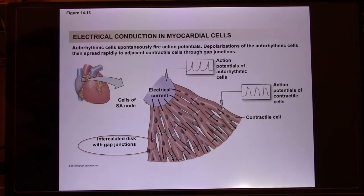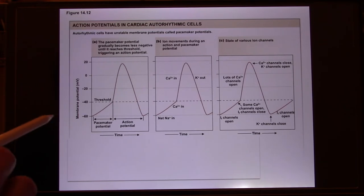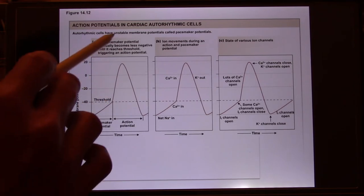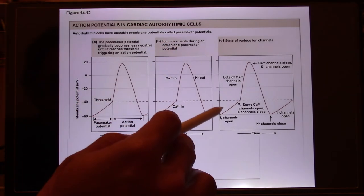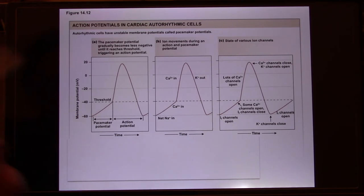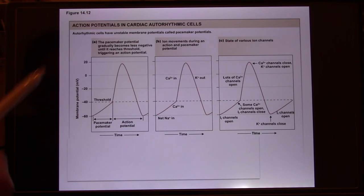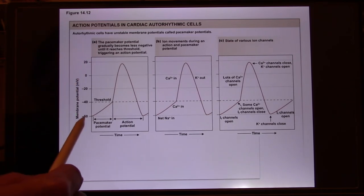The action potential of pacemaker cells looks like this: it starts from depolarization, gradually drifts to threshold, fires an action potential, then depolarizes and drifts to threshold again — repeatedly. You notice there is no stable resting membrane potential, which is very unique. When we talk about neurons, they have a resting membrane potential of about minus 70 millivolts, then depolarize to threshold. But pacemaker cells don't have a stabilized resting membrane potential — they always drift out.